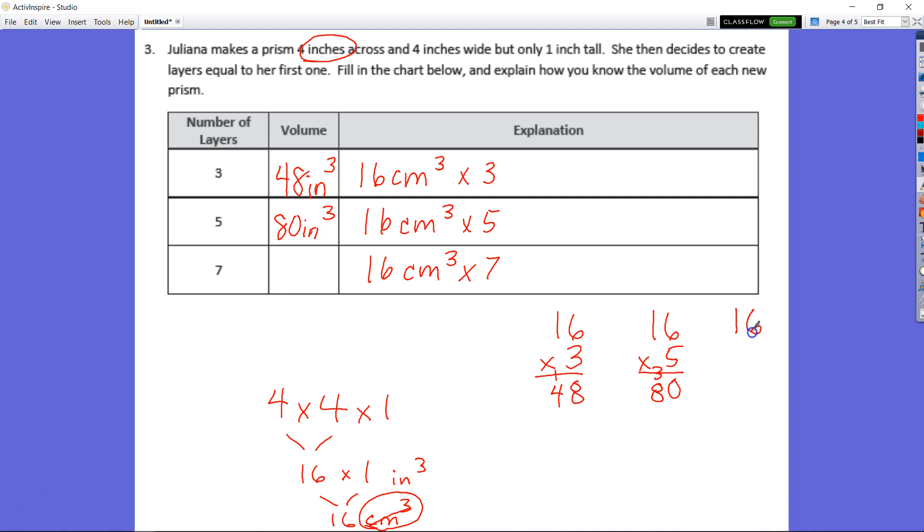And last but not least, seven, you should see the pattern. The difference is, we're just adding on. So we have seven times six is 42. Seven times one ten is seven tens plus four tens. Seven, eight, nine, ten, eleven tens, which is 112. So we have 112 inches cubed. All right, moving on.